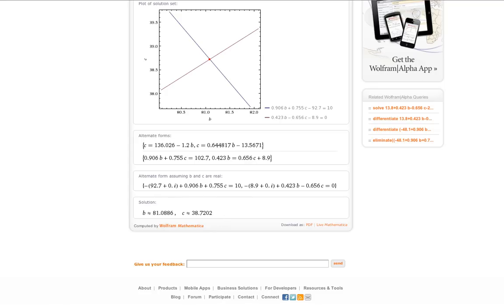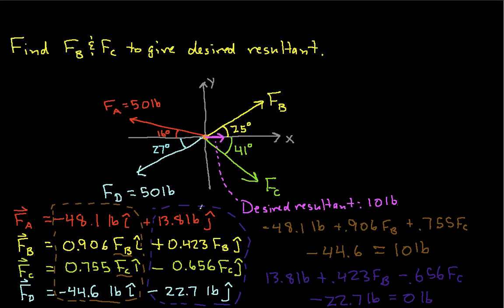So, if we go back to our picture we can say then that Fb needs to be 81.1 pounds and Fc needs to be 38.7 pounds in order to have the resultant of all of these forces be 10 pounds in the x direction.